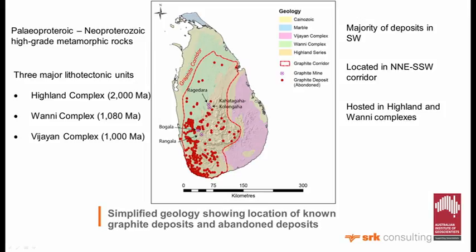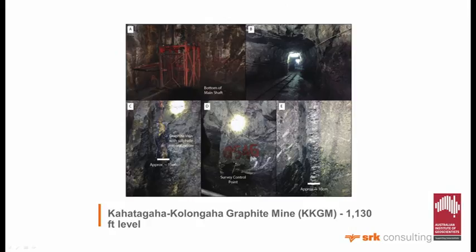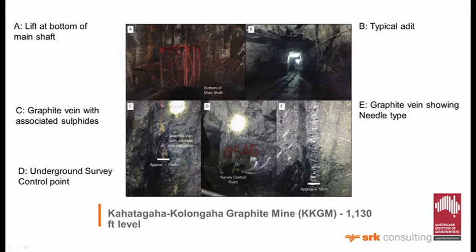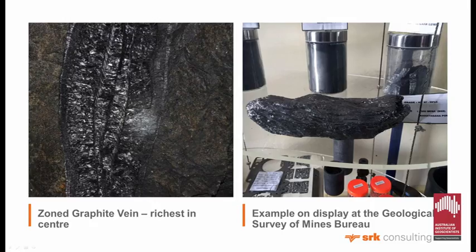These are photos from a site visit I did to the government's underground mine, showing the lift at the bottom of the main shaft and a typical adit - this is down at the 1,130-foot level. There is a graphite vein here with some sulphide mineralisation - the scale bar is about 15 centimetres. This is a survey point underground for mapping, and an example of a graphite vein showing needle fibrous texture perpendicular to the wall rocks. Another example from underground shows that these veins are zoned, with the richest graphite towards the middle, although sometimes you also get a surface along the middle which tends to be quartz, calcite, and some sulphides - mostly pyrite.